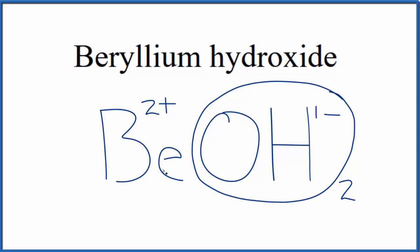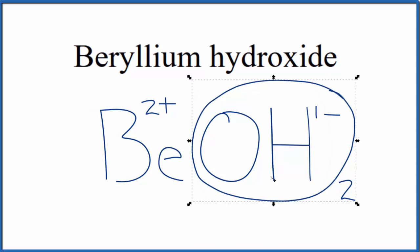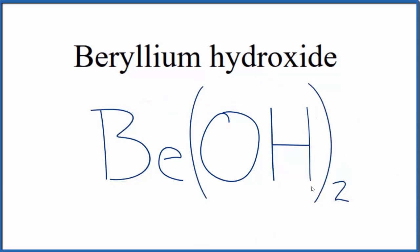This is the formula for beryllium hydroxide. We need to put parentheses around the hydroxide to show that we have two of them, Be(OH)2. The 2 shows that we have two hydroxide ions bonded with the beryllium. This is Dr. B. Thanks for watching.